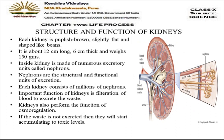Each kidney is purplish-yellow in color, slightly flat, and bean-shaped, about 12 centimeters long, 6 centimeters thick, and weighing 150 grams. Inside each kidney there are numerous excretory units called nephrons, which are the main structural and functional units of the kidney. Each kidney consists of millions of nephrons. The important functions of the kidney are filtration of blood and osmoregulation.